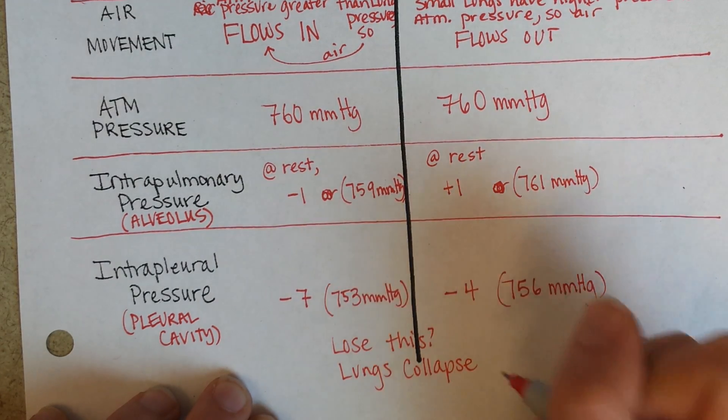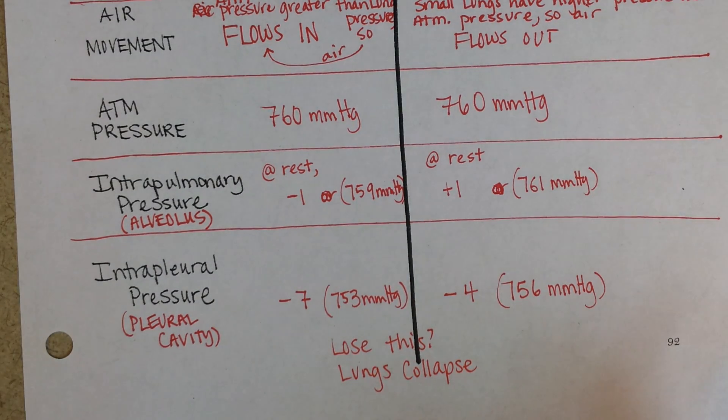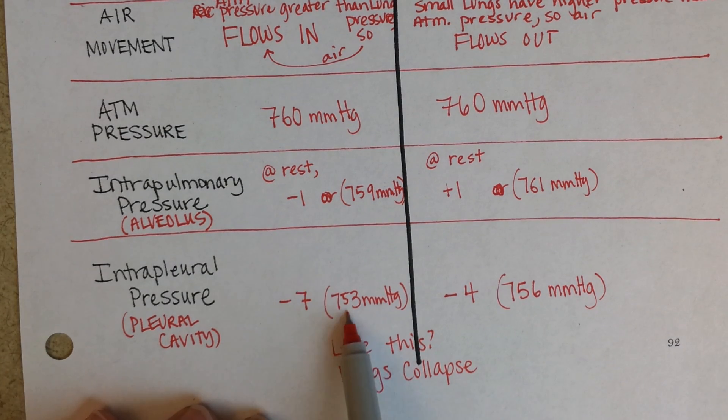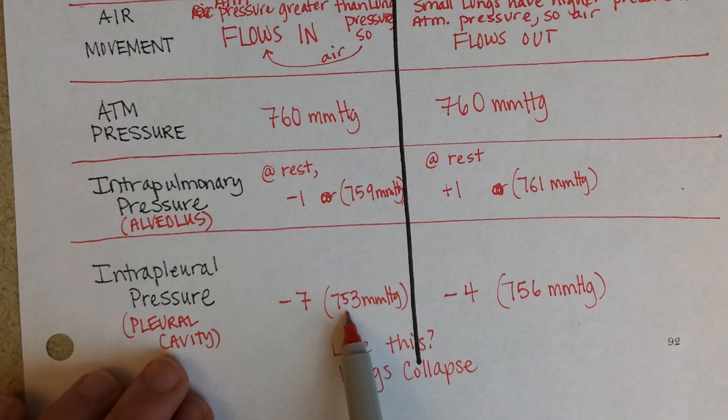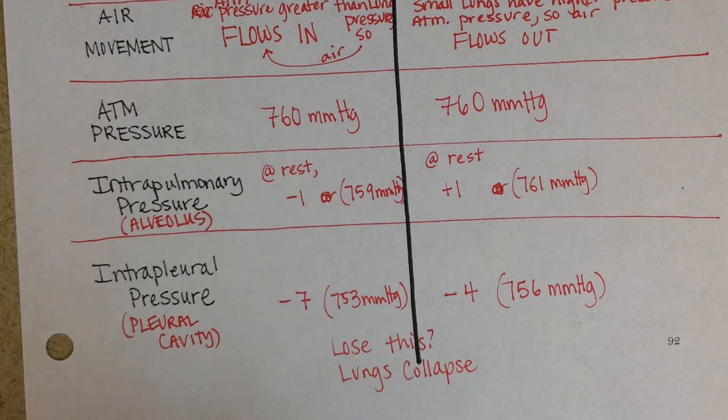And that's what happens then if there's trauma and the pleura is pierced with, let's say, a stick or something that someone falls on. Then all of a sudden, instead of being 753, the pleural cavity is 760. And the alveoli, they're so fragile, they can't stay open.